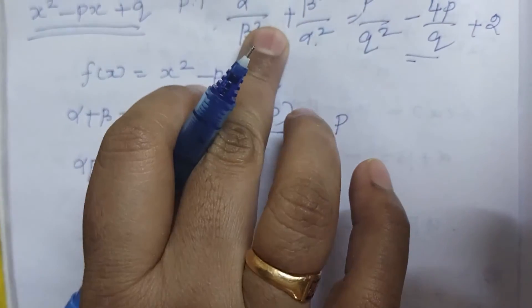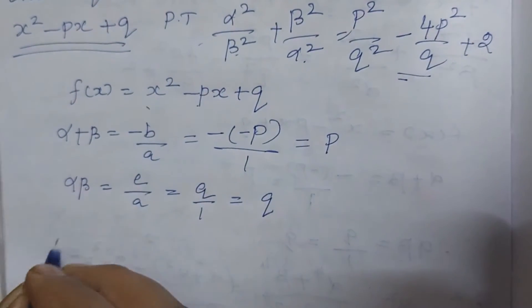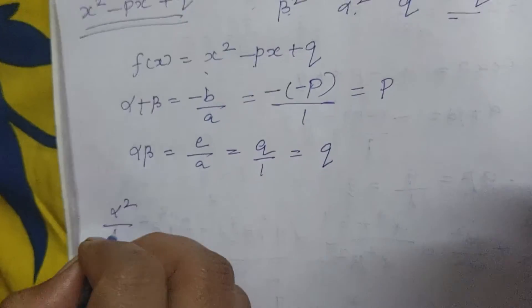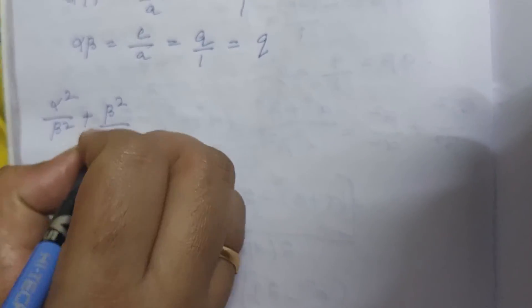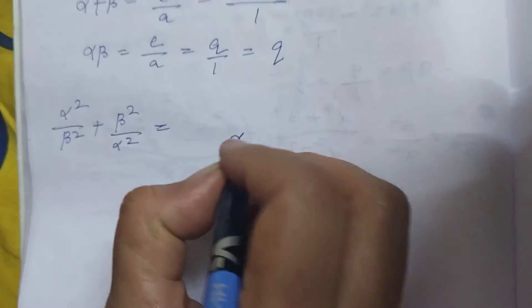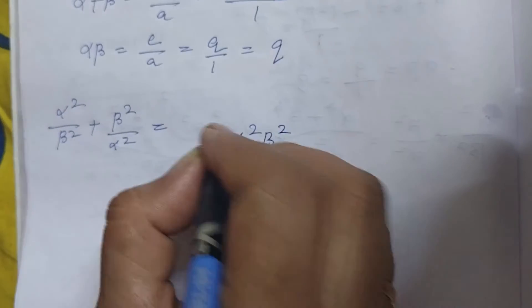Here two parts are having, this one left hand side, this one right hand side. So I take the left hand side first: alpha square by beta square plus beta square by alpha square. That is equal to, you have to take the LCM, alpha square beta square.